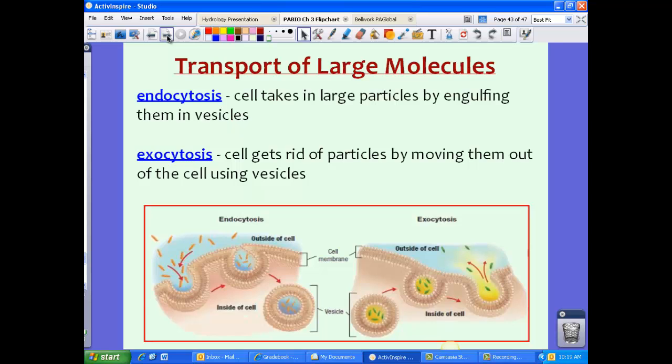Now, if there are molecules that are just really, really big, we need to do a different kind of process. Active transport might not necessarily work. Instead, we're going to use two different types of transport. We have something called endocytosis that your body will use when large particles need to be moved across that plasma membrane. If you take a look at the picture on the left, this is what endocytosis does. The cell will actually take in the large particle by engulfing it using vesicles.